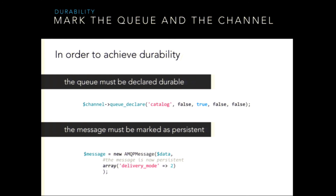We've seen what happens when consumers die — but what if the broker dies? When the broker dies, we lose messages again. We can prevent this with a property called durability. We have to mark both the queue and the message as durable. To declare the queue as durable, we pass the second flag of queue_declare to true — meaning the queue will survive server restarts. It's not enough though; we also mark the message as persistent by passing an options array to the AMQPMessage with delivery_mode set to persistent.